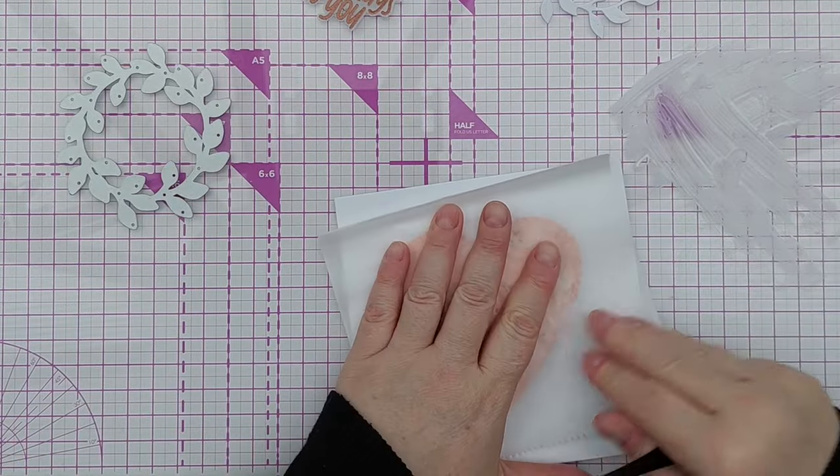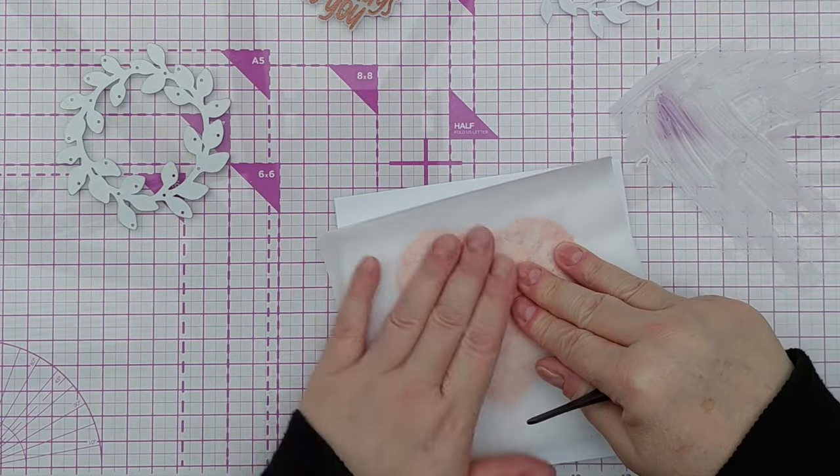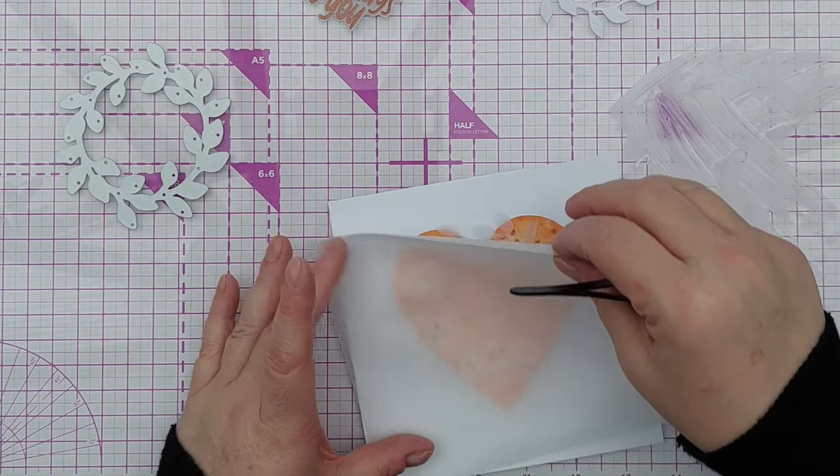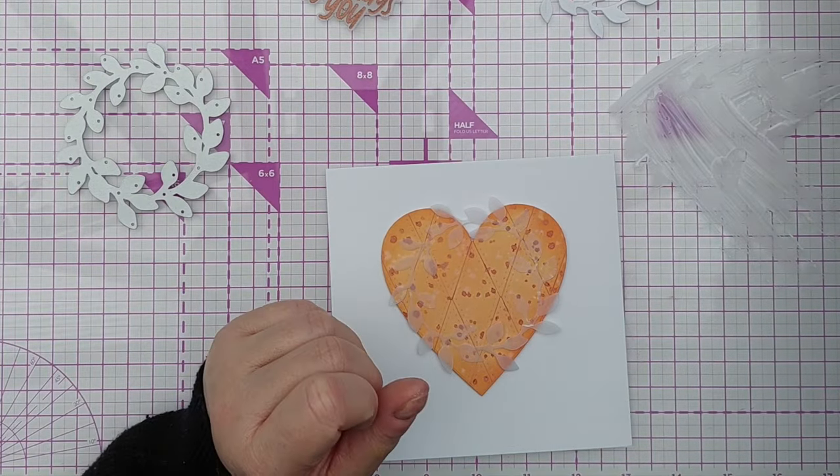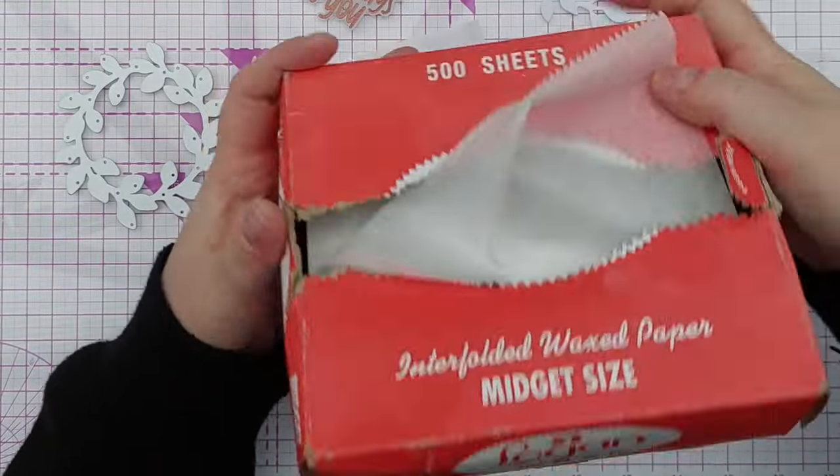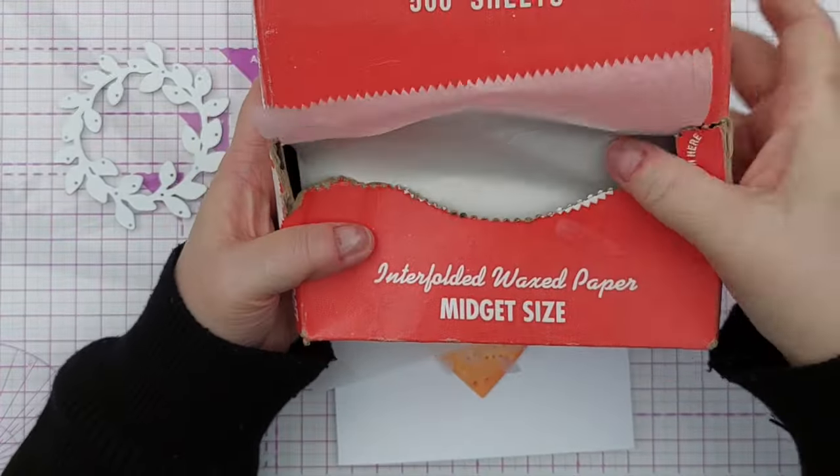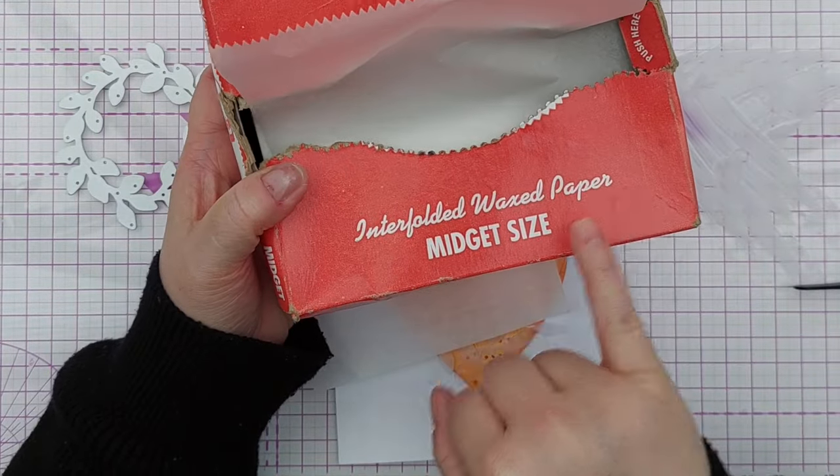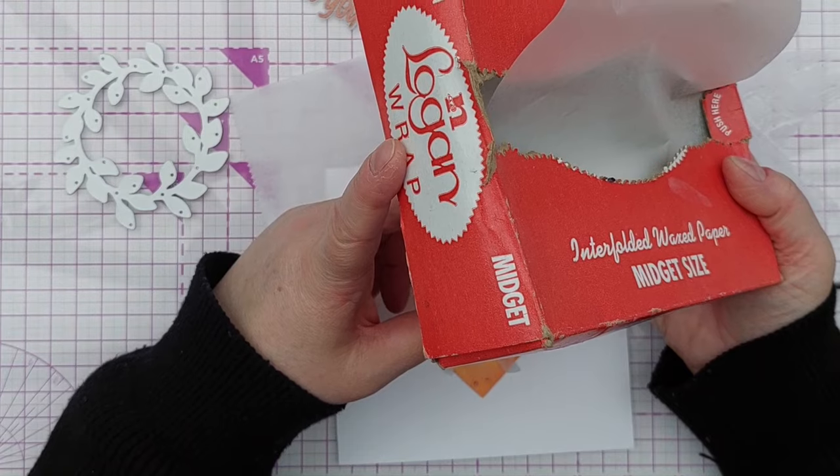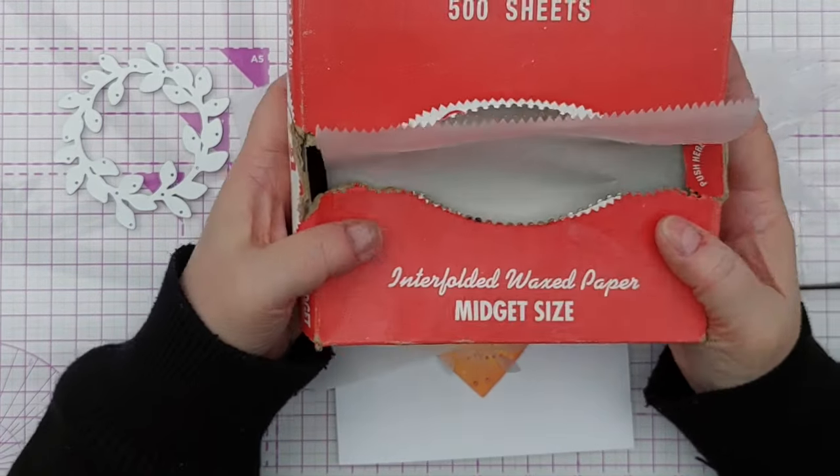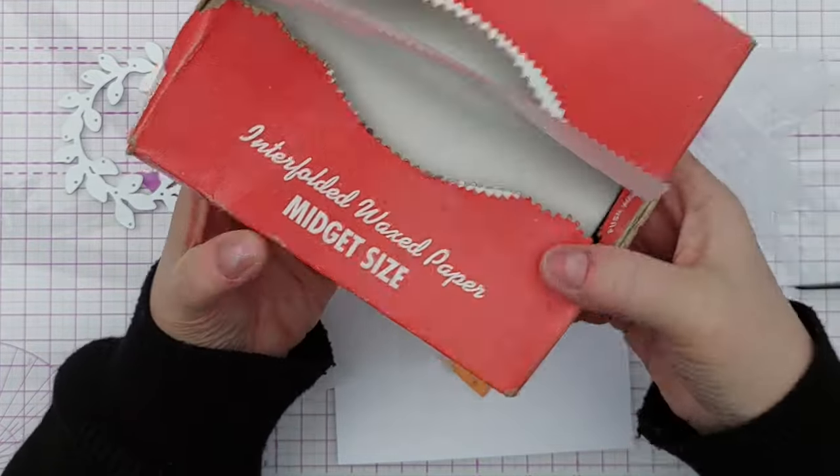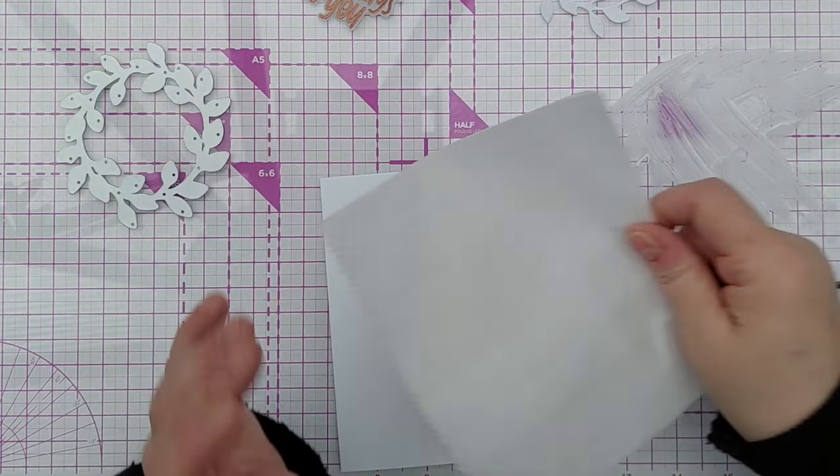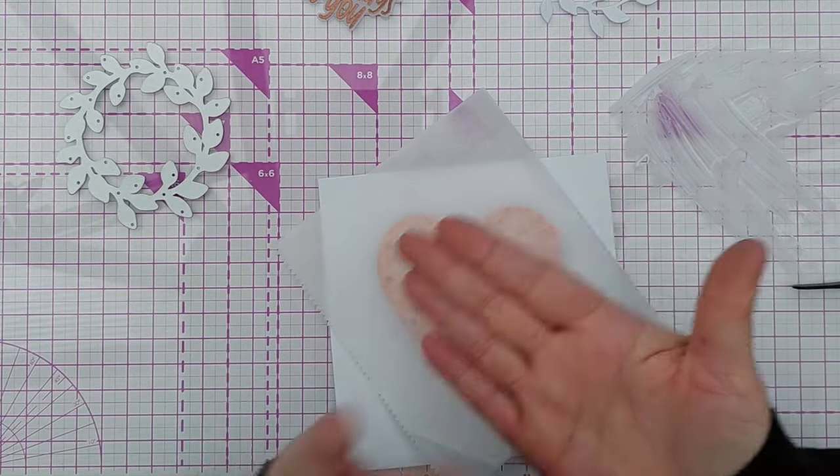And press it down with a bit of deli paper. I've had a few questions about what is deli paper and why do I use it. I use deli paper—well, first of all, this is the box that I had. It is Logan wrap 500 sheets interfolded waxed paper, and I bought this for gel printing when I had a gel plate. And oh gosh, I've hardly made a dent in it really. I've had it for years.